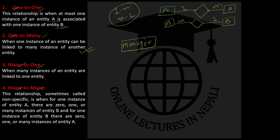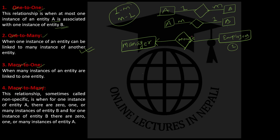For example, one manager can manage many employees, but one employee can be managed by only one manager. This illustrates one-to-many. We can represent this in the ER diagram by writing '1' and 'M', or by using arrows — an arrow on one side and 'many' on the other side.